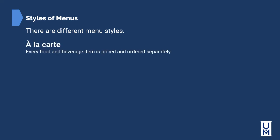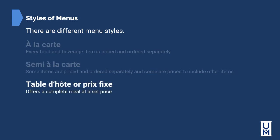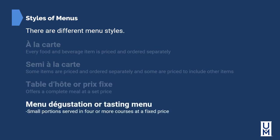There are several different styles of menus as well. A la carte means every food and beverage item is priced and ordered separately. Semi a la carte means some items are priced and ordered separately while some are priced to include other items. Table d'hôte, or prix fixe, offers a complete meal at a set price. Menu dégustation, or tasting menu, offers small portions served in four or more courses at a fixed price.